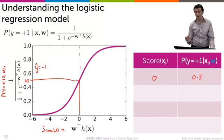And everything to the right of 0 has score greater than 0, so we should be predicting that y hat on the right side is equal to plus 1.